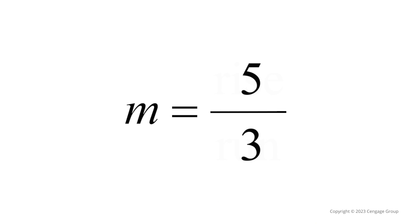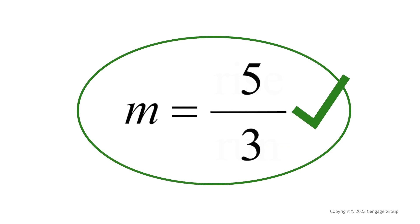Therefore, our slope is 5 over 3, or 5 thirds. In other words, for every 5 units we move up the line, we move 3 units to the right. Lastly, always check to make sure your fraction is completely reduced.